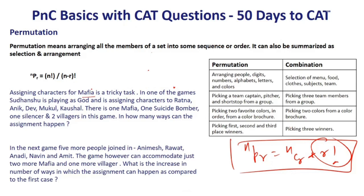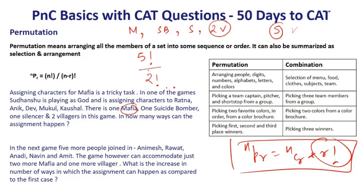Example: Mafia game. Sudhanshu is assigning characters to 5 people — Ratna, Anik, Dev, Mukul, Kaushal. Characters are: 1 Mafia, 1 Suicide Bomber, 1 Silencer, and 2 Villagers. There are 5 people and 5 characters. They can be distributed in 5! ways. However, the 2 Villager positions are identical, so divide by 2!. Answer: 5! / 2! = 60.